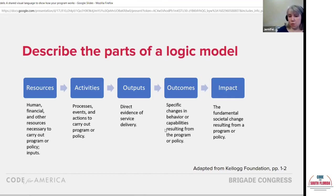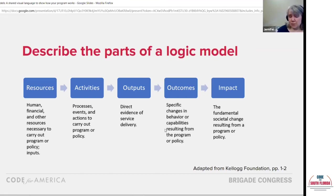We move on to the changes we really want to see: changes in behavior or capabilities resulting from the program or policy. These are the outcomes, and this is what your funder or granting agency is going to be most focused on. How does the participant actually change through the program? Finally, you want to see impact — things that go beyond individual participants to broader community or societal change. This is not always feasible to measure, but when you can, it's really compelling in telling the story of your program.